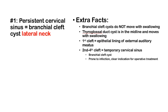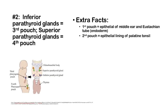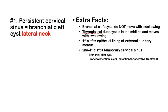Number 1: A persistent cervical sinus is equivalent to a branchial cleft cyst, found in the lateral neck. These cysts do not move with swallowing, distinguishing them from the thyroglossal duct cyst, which is midline and does move with swallowing. The first cleft is the external auditory meatus. The second through fourth clefts are temporary sinus derivatives giving rise to branchial cleft cysts, which are prone to infection and are a clear indication for operative treatment.